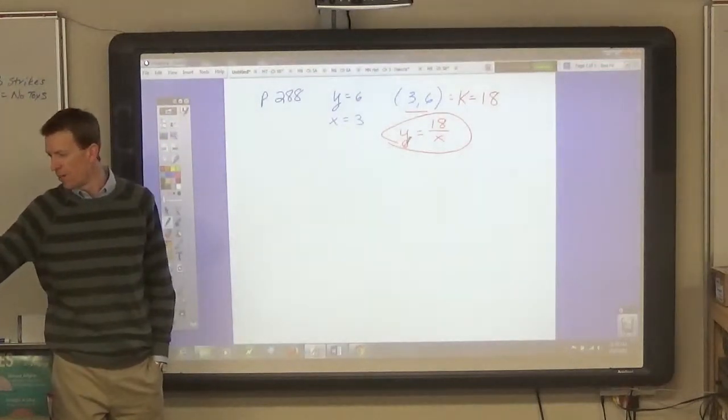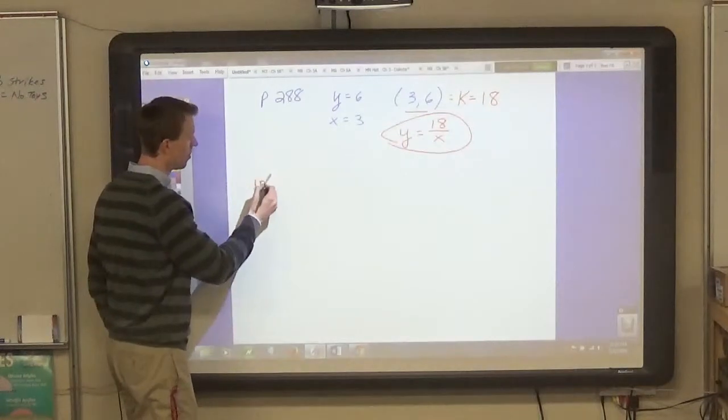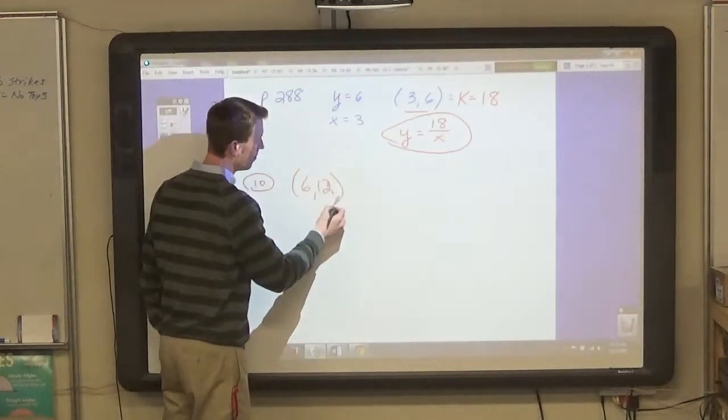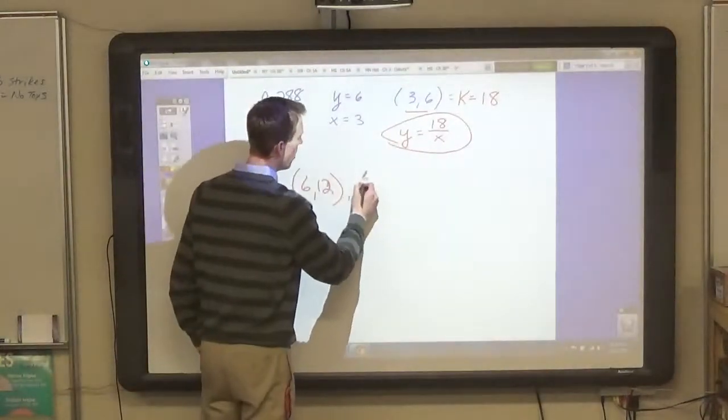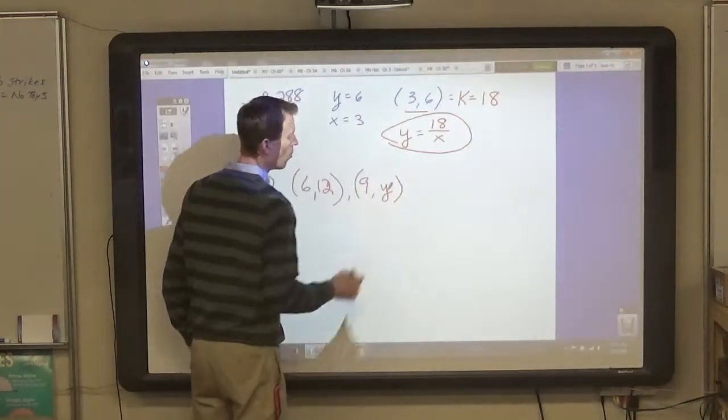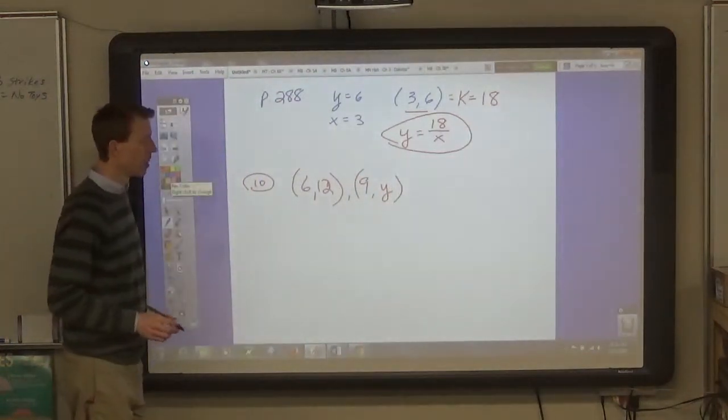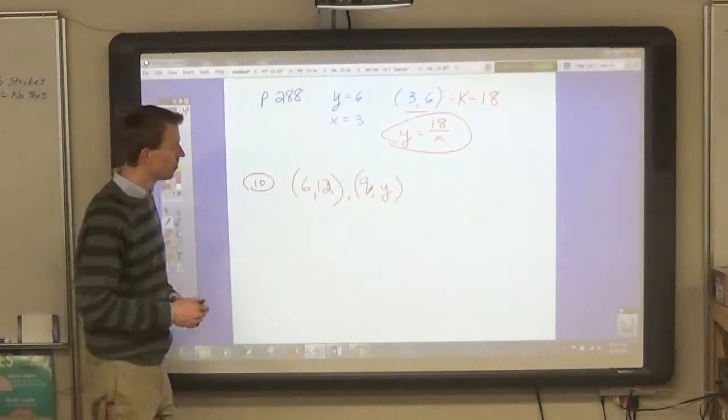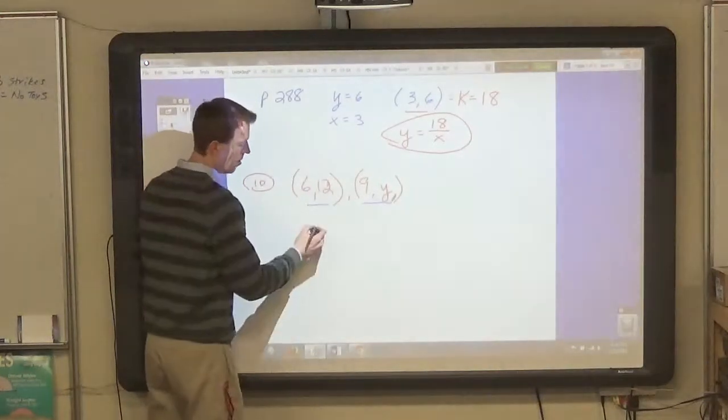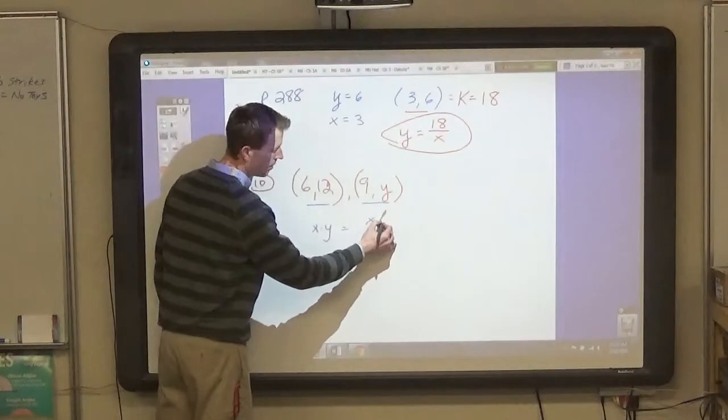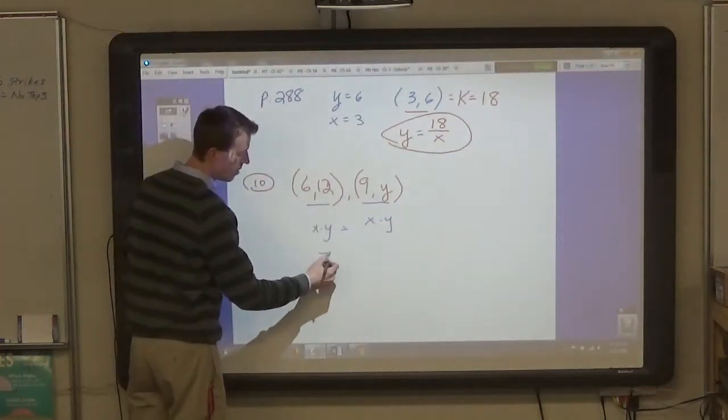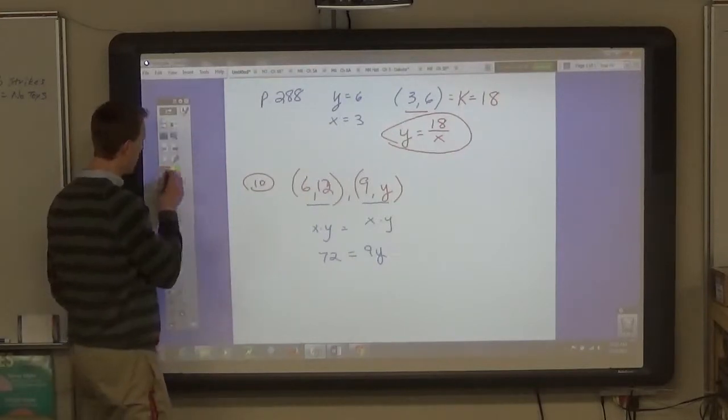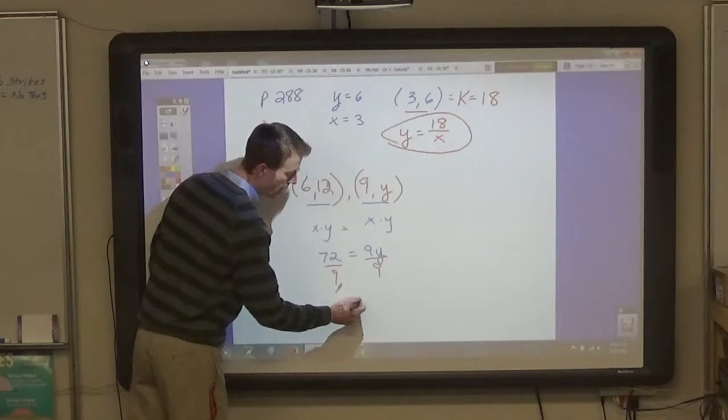That's the first section. In the second section, like in number 10, they give you 2 points. First, they give you 6 and 12, and then they give you 9 and y. And you have to find what y equals. They tell you that these two points vary inversely. That means they are on the same line. So you can use x times y equals x times y, or 72 equals 9y. And so what? Solve for y.